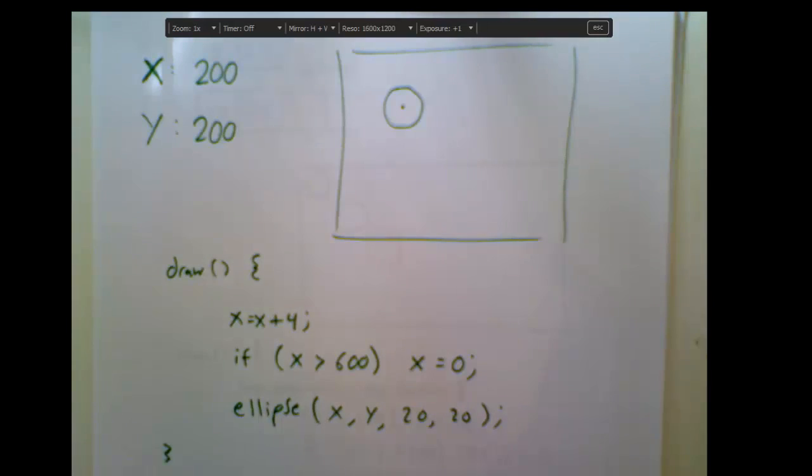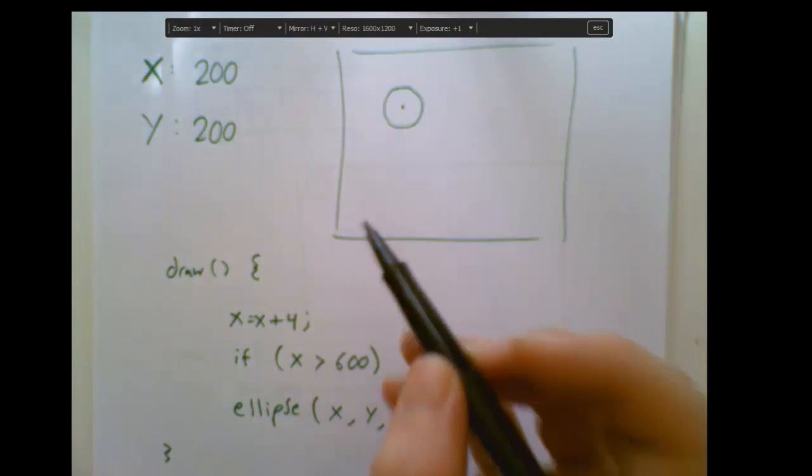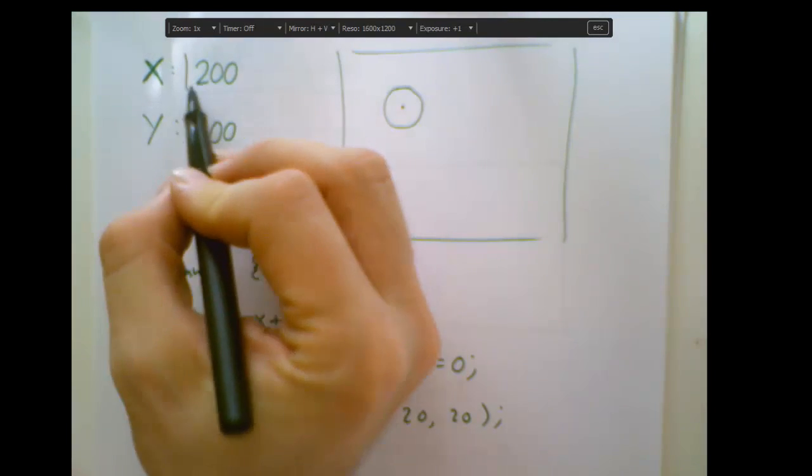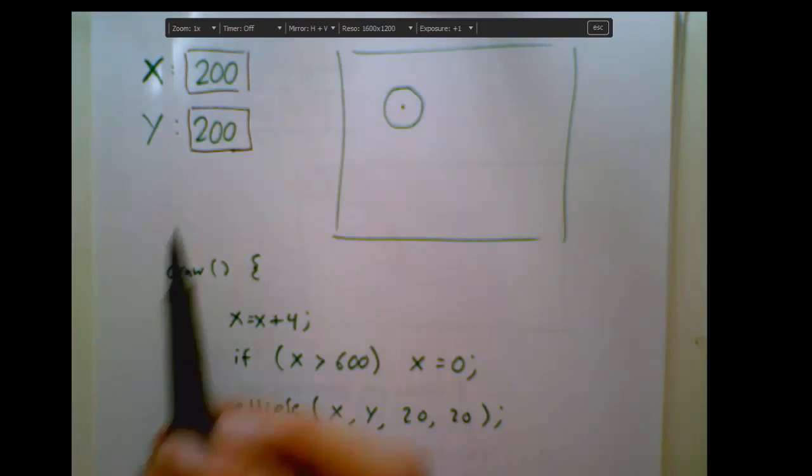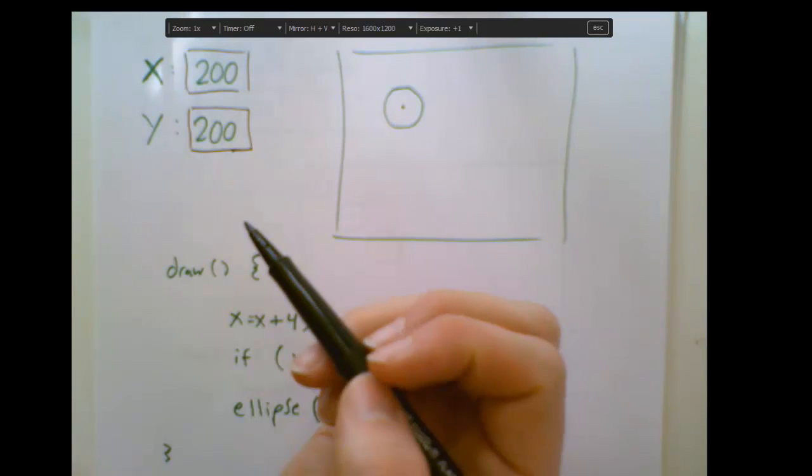If this is our screen, you've got to remember, the only thing the computer can see are the numbers that are inside the variables. So we have two variables, x and y, and let's pretend they each start out holding the numbers 200.